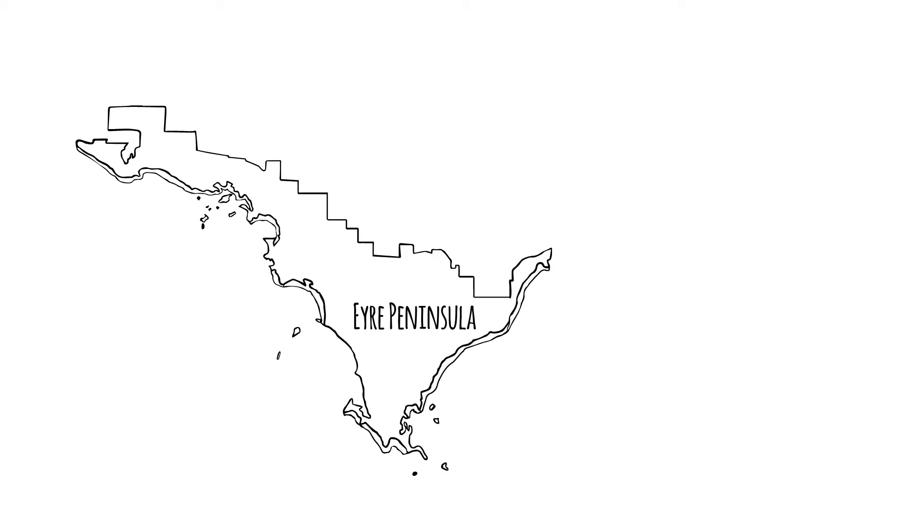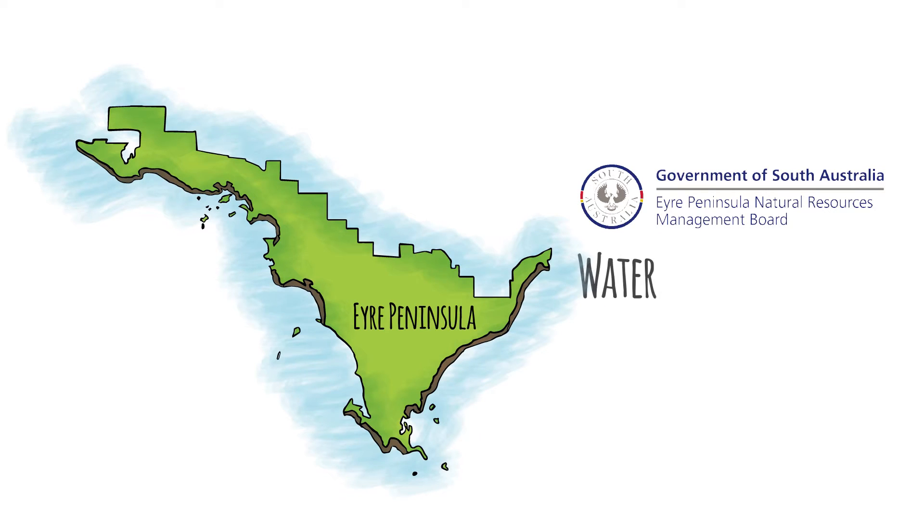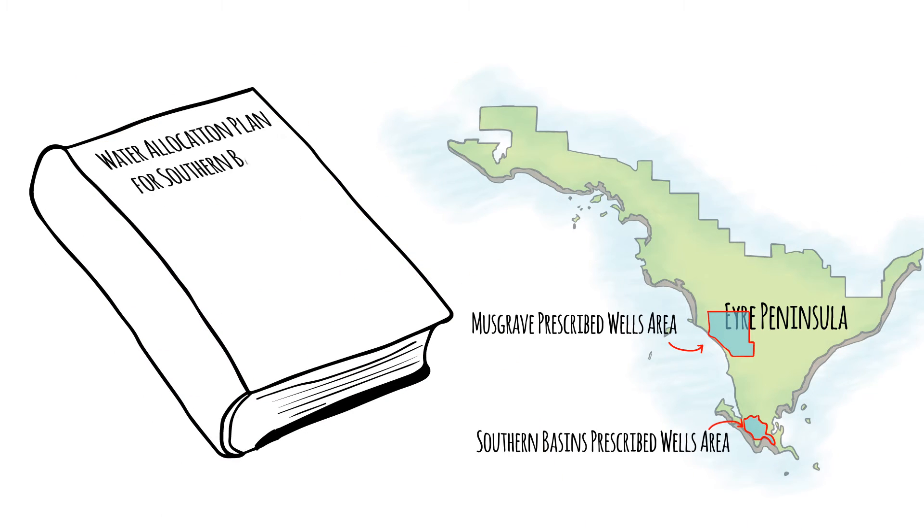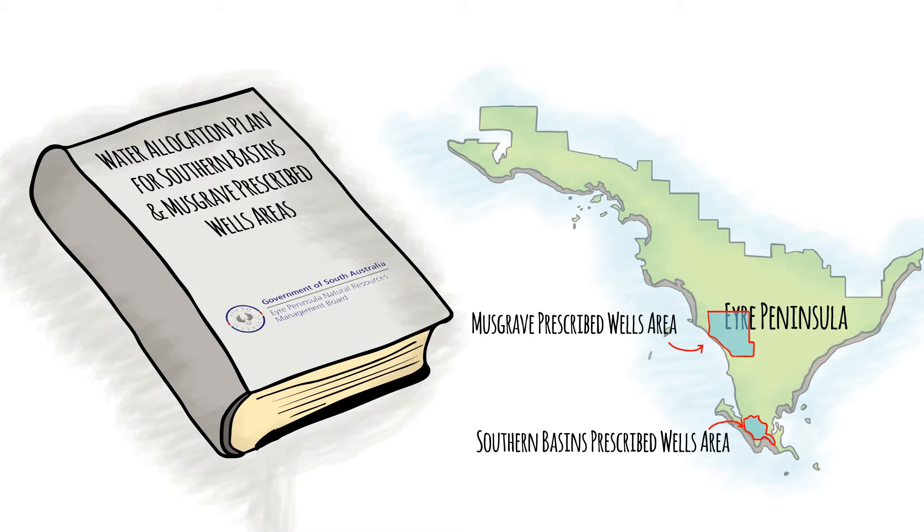The Eyre Peninsula Natural Resources Management Board has prepared a new water allocation plan for the southern basins and Musgrave prescribed wells areas. A water allocation plan, or WAP for short, is an important document that allows for the management of groundwater in these two areas of Eyre Peninsula.